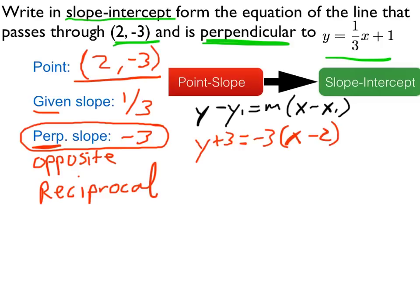And now we need to change that into slope-intercept form. We'll use the distributive property first: negative 3 times x, and negative 3 times negative 2. And that yields y plus 3 is equal to negative 3x plus 6.